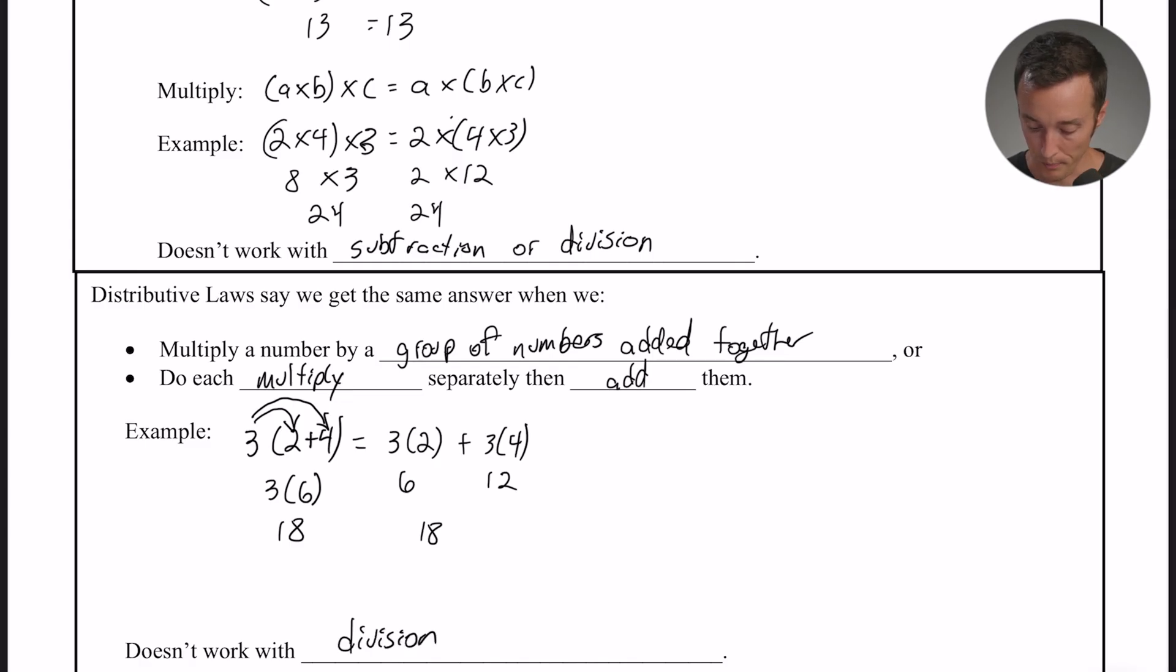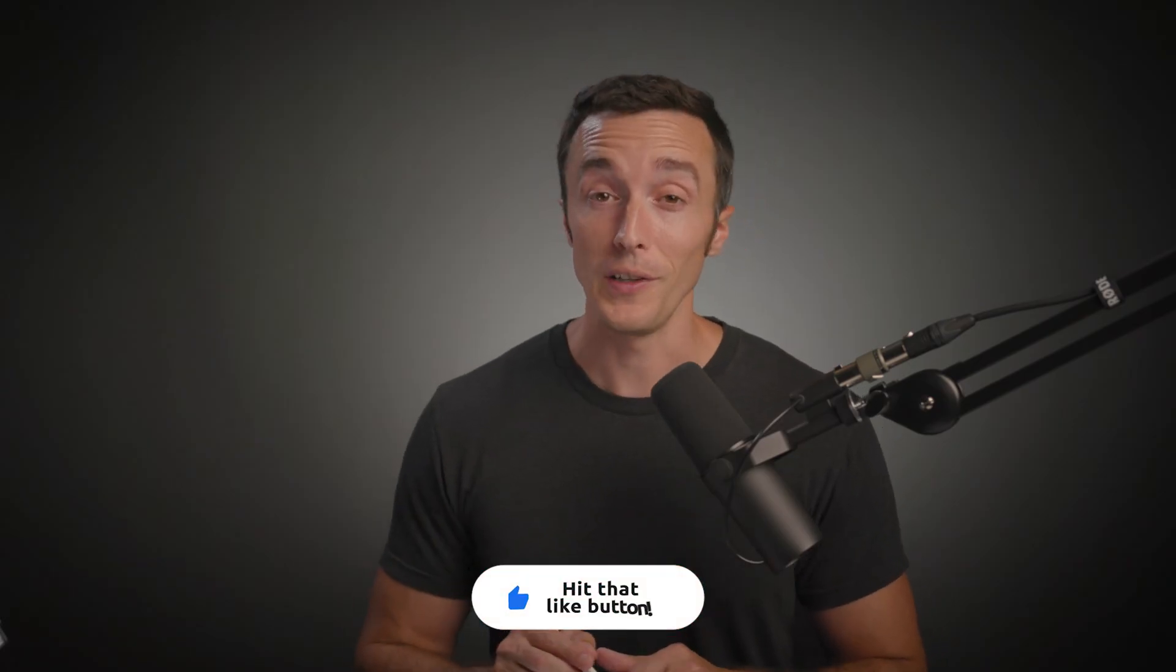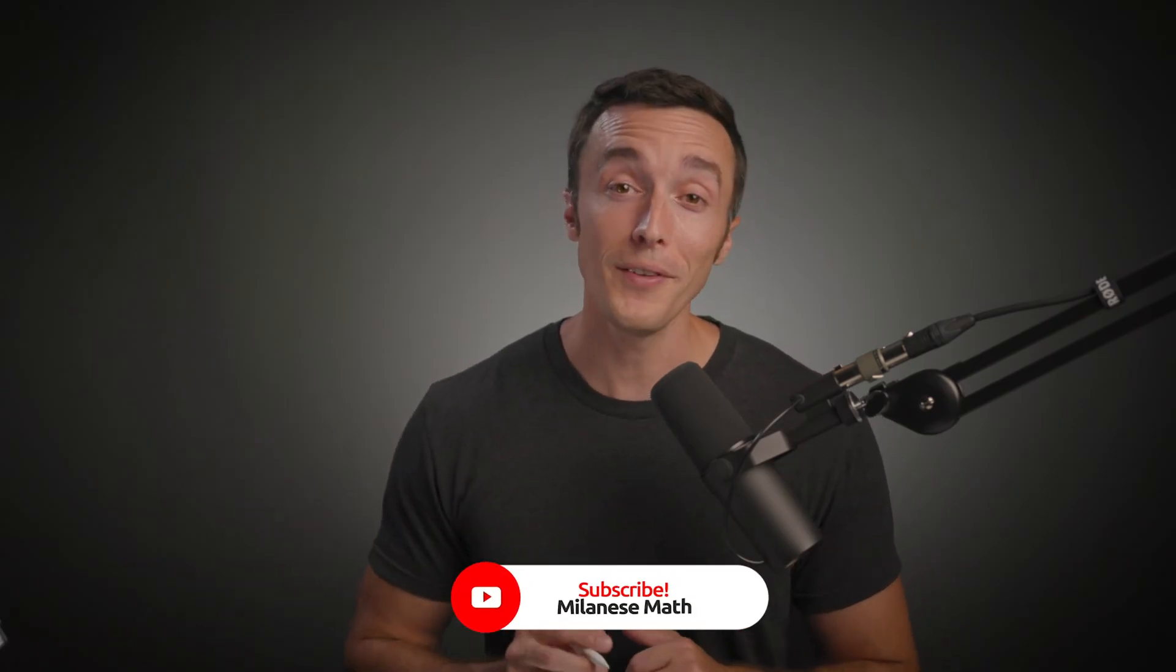So you can use these laws in all types of contexts. As you get into some really advanced math, you need to know what you can and can't do. So that's just a quick crash course in commutative, associative, and distributive properties. I hope this video was helpful. If it was, consider subscribing to the channel, and as always, thanks for watching and we'll catch you next time.